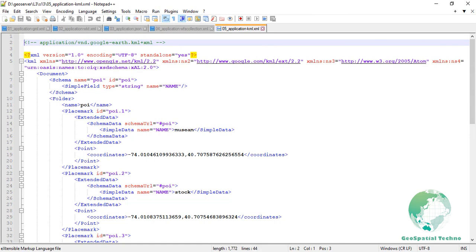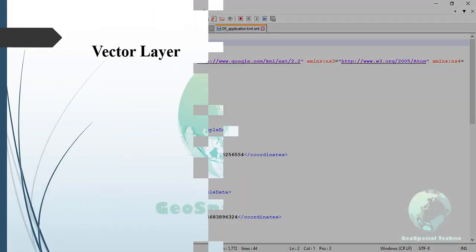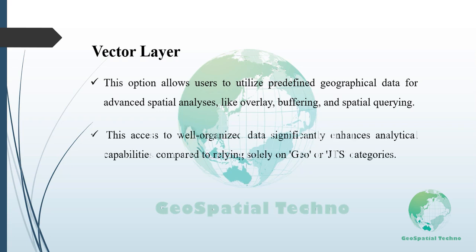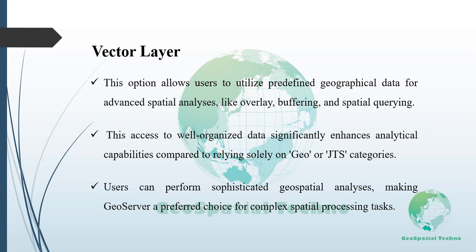The reference and subprocess inputs for GS and WEC categories have been briefly explained in the JTS and GEO sections, and will be explored in more detail with examples in the next sessions. The vector layers option allows users to utilize predefined geographical data for advanced spatial analysis including overlay analysis, buffering, and spatial query. Access to well-organized data such as points, lines, and polygons significantly enhances analytical capabilities compared to relying solely on GEO or JTS categories.